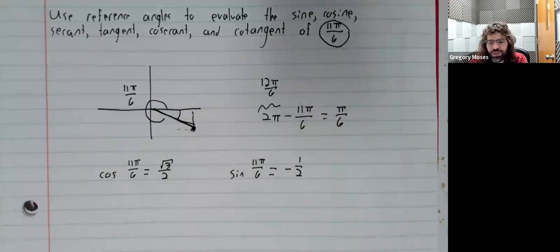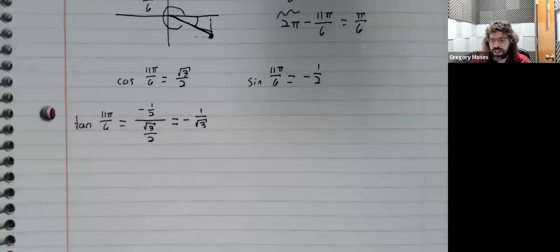And once we've found the cosine and the sine, we can fill the others in. And the textbook gives you some horrible mnemonic that's supposed to help you remember when the trig functions are positive or negative.